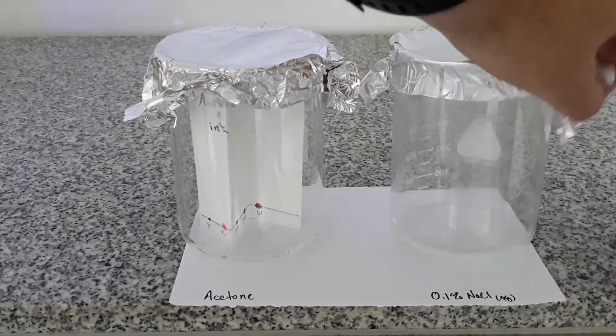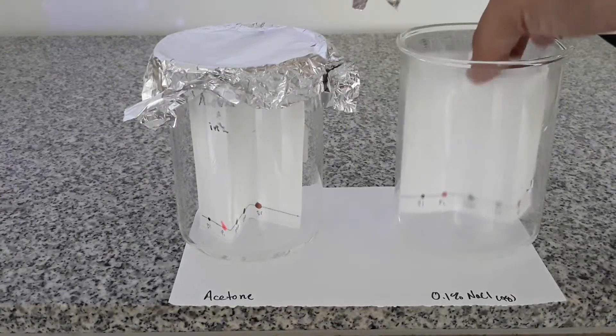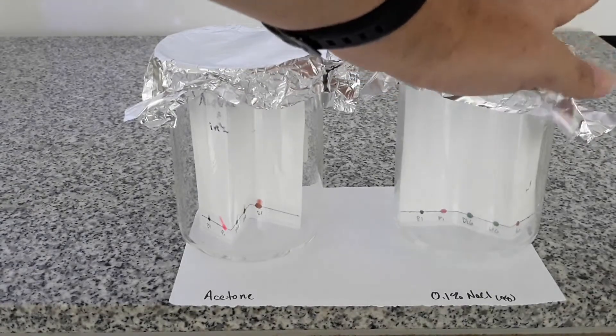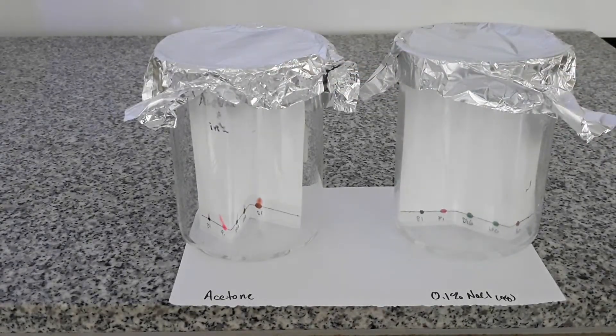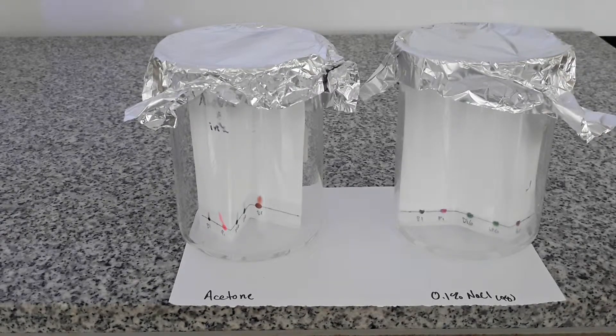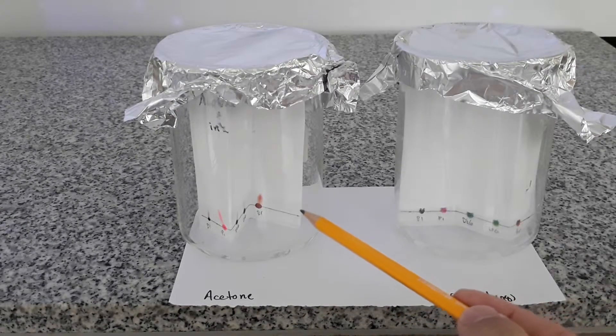You'll see that they will start to run pretty quickly. You won't have to wait around very long to see the colors start to separate. You can see acetone is already starting to separate the pink and the brown and the sodium chloride is just now reaching the start point.